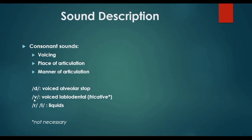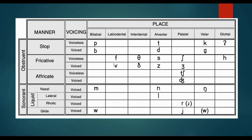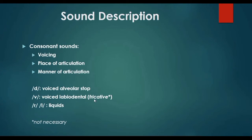Here we have another example — the sound /v/. According to voicing, /v/ is voiced. According to place of articulation, this sound is labiodental. And according to manner of articulation, /v/ is fricative. But pay attention — there is an asterisk here indicating that the fricative feature is not necessary. Why? Because there are only two labiodental sounds, /f/ and /v/, and both are fricative. So it is not necessary to include this feature in the sound description.